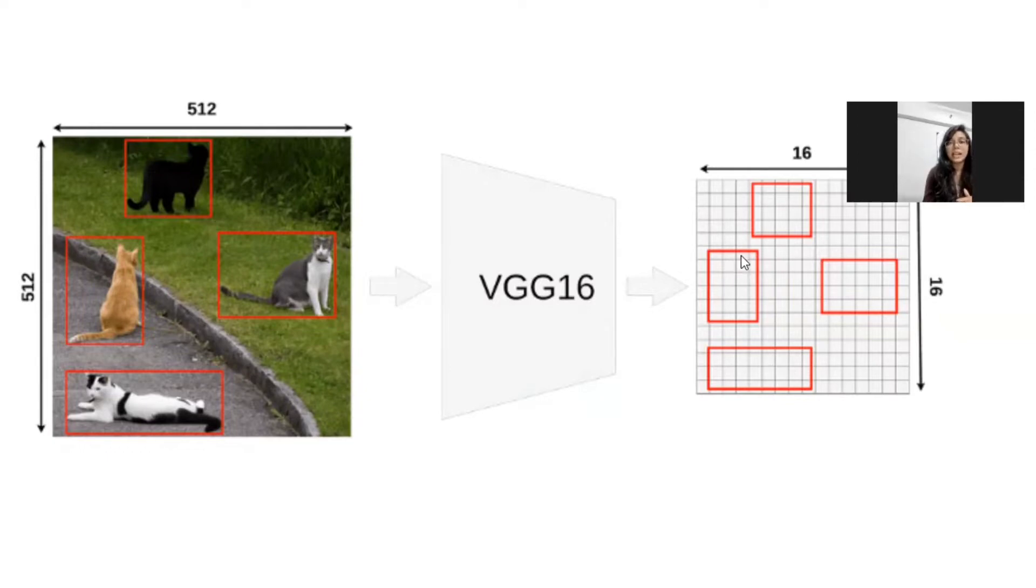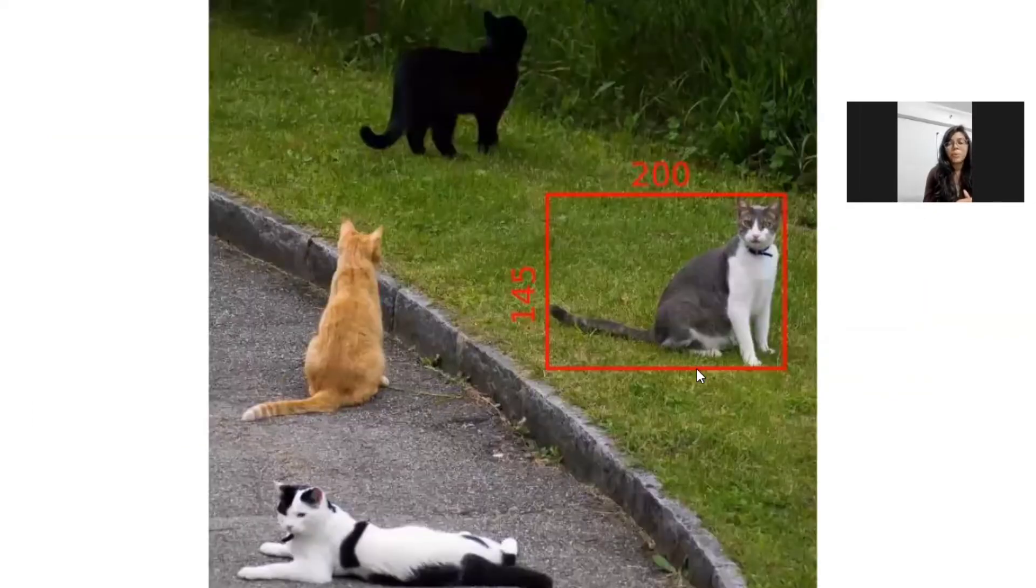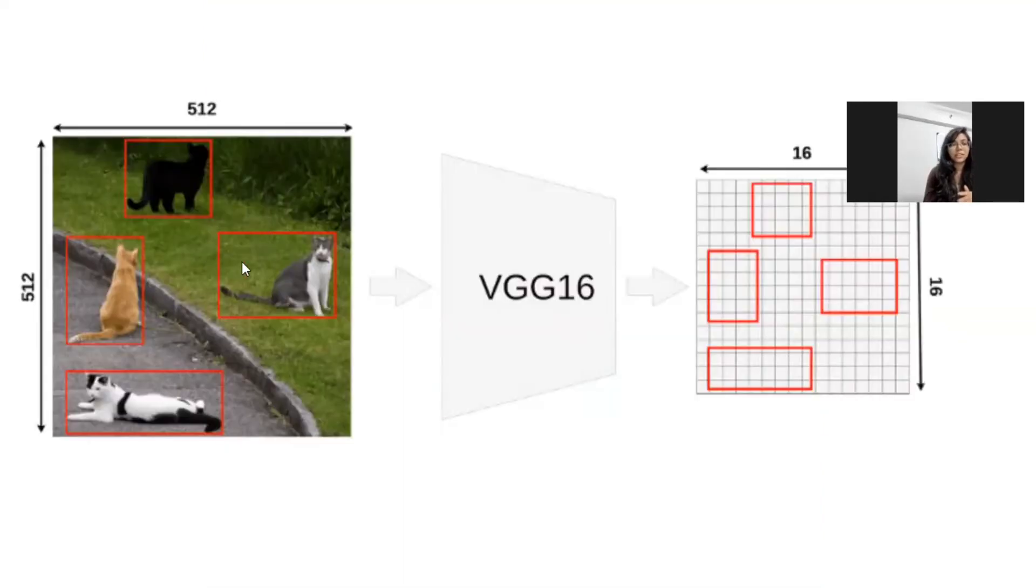the output feature map that we get is of 16 by 16 size. And you can see that these are the various regions of proposal. These are the regions where the objects are. Now, when it got converted, when this resizing operation was done, obviously, these object sizes will also get reduced. So based on the coordinates, it will get reduced by 32 times. As you divide 512 by 16, you will get 32.